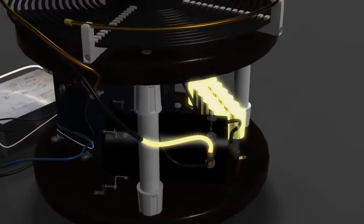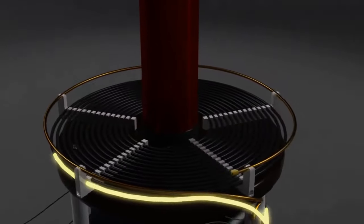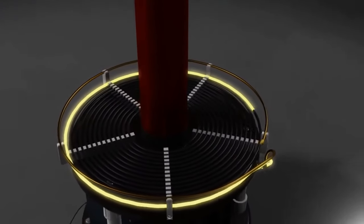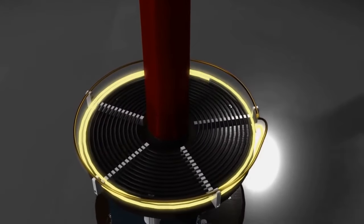For the Tesla coil to operate, the primary coil must work in conjunction with the capacitor bank to produce an oscillating current that matches the natural resonance frequency of the secondary coil.